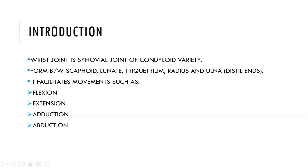First of all, the introduction of the wrist joint. It is basically a synovial joint with a condyloid variety. The bones forming it are the scaphoid, lunate, and triquetrum in the carpal bones, while the radius and ulnar in the forearm form the distal ends. The movements it facilitates are flexion, extension, adduction, and abduction.